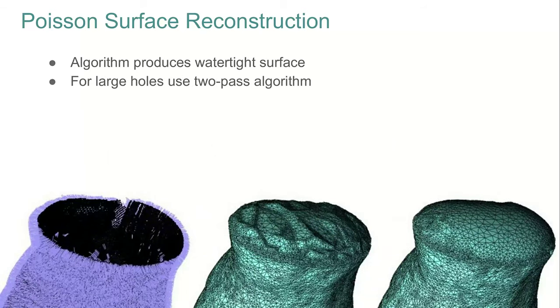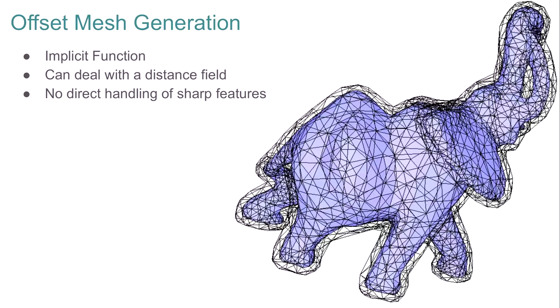There is even a two-pass version of this algorithm to improve the output mesh quality when there are large holes. Another type of implicit function that can be meshed is the distance function to a polygon mesh, which can be used to generate offset surfaces with positive or negative offset values. Note that no detection of sharp features in the output will be done automatically, so they will not be protected unless provided by hand.